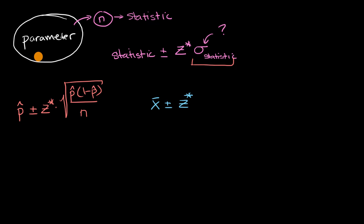Now if we knew the standard deviation of this population, we would know what the standard deviation of the sampling distribution of our statistic is. It would be equal to the standard deviation of our population divided by the square root of our sample size. But we often will not know this.